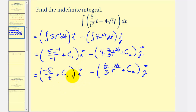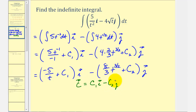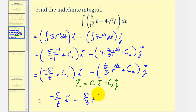This can be written a different way. If we let vector C, our constant vector, be equal to c₁ i minus c₂ j, we can give the antiderivative as negative five divided by t times i, minus eight-thirds t to the three-halves, plus our constant vector C.